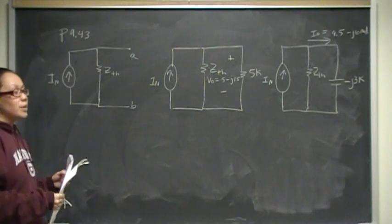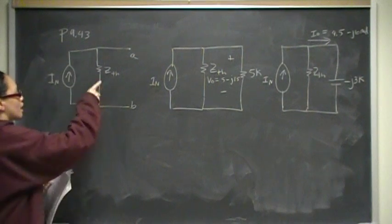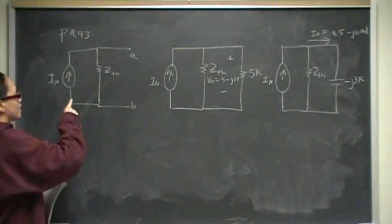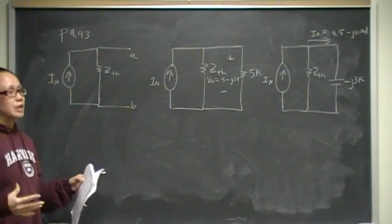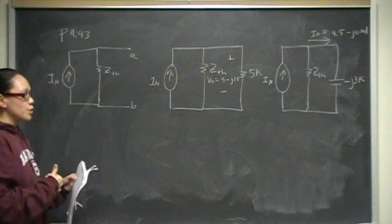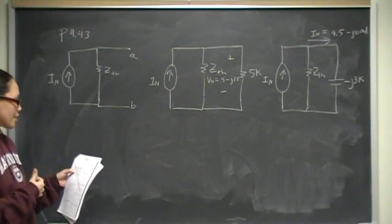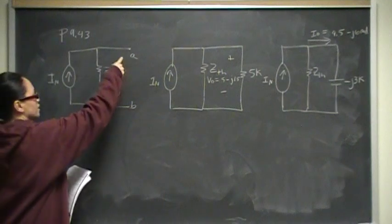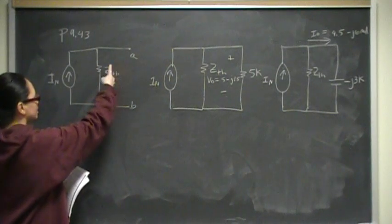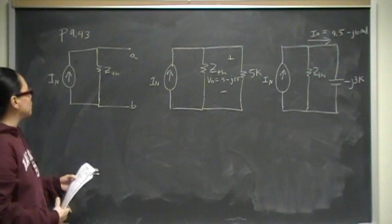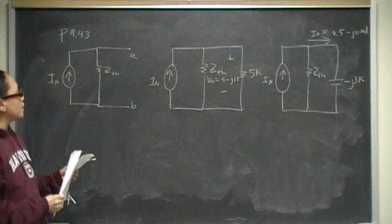Remember that a Norton equivalent circuit is if you were to take a complex circuit and reduce it into a single independent current source in parallel with Z-Thevenin. That is what the load sees: an independent current source in parallel with Z-Thevenin.